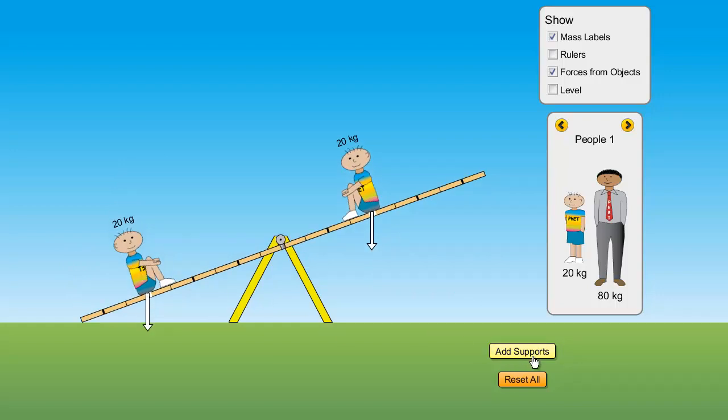So, clearly the location of that force in relation to the pivot actually makes a difference. And we call that a torque. The further away from the pivot point I am, the greater the torque that this child is exerting on the pivot. And it causes the beam to actually rotate.